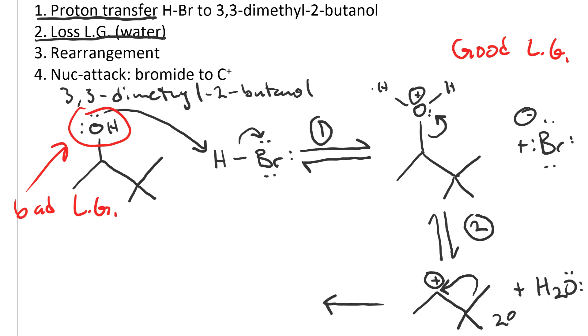This reaction arrow for step three, rearrangement, must be drawn in one direction, because rearrangements are not reversible. So we've moved the methyl group to the carbon on the left, which moves the positive charge to the carbon on the right.